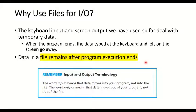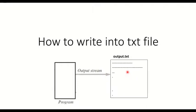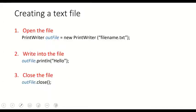We will start chapter 10 with how to write into a text file. We will write a Java program, do some calculations, and instead of outputting to the monitor, we will output to a text file so the data is saved and we can open the file later to view it.